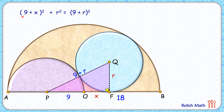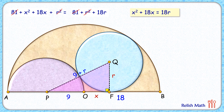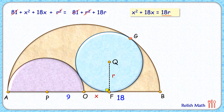Expanding both sides using (A+B)² and simplifying: 81 cancels and R² cancels, giving the equation 18R = X² + 18X. We need one more equation in R and X to solve. We've used the fact that the purple and blue circles are in contact. Now we'll use the fact that the blue and brown circles are in contact. Let's remove the previous construction and name the point of contact between blue and brown circles as point G.